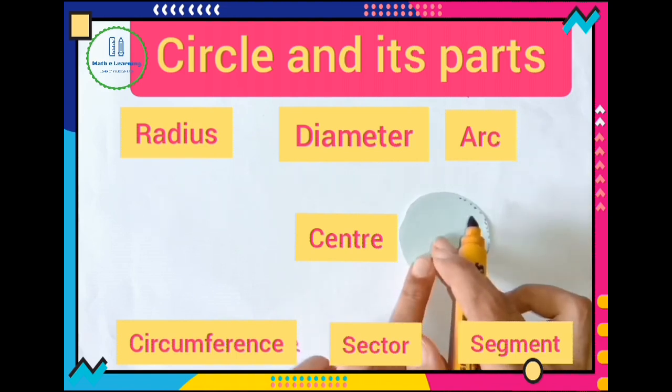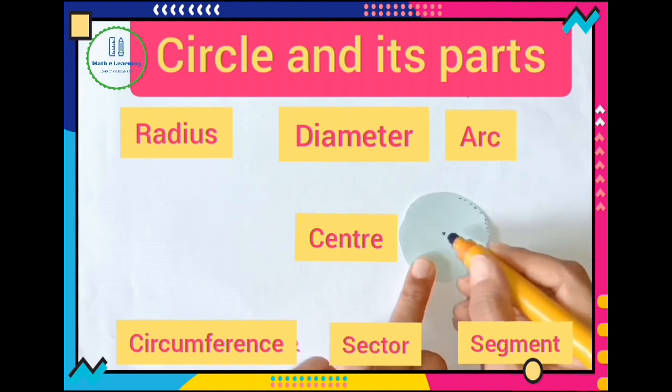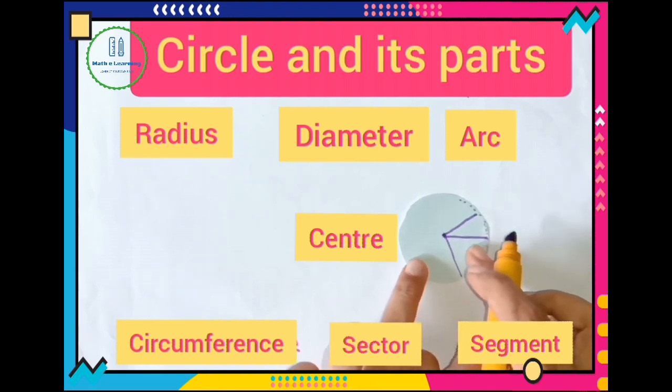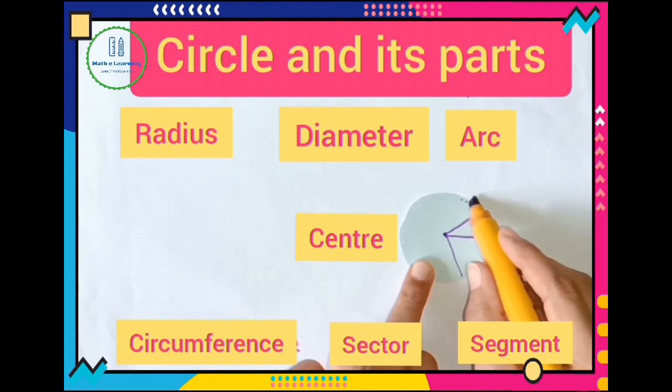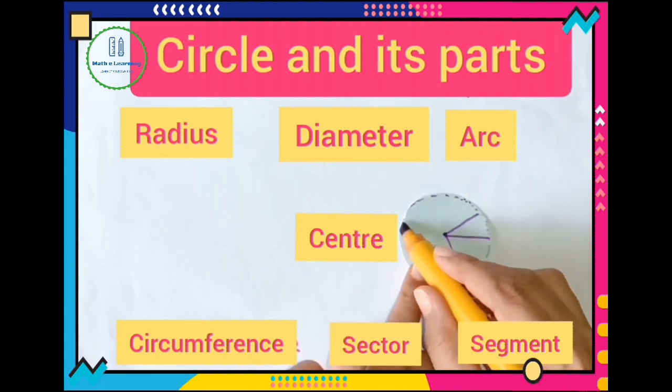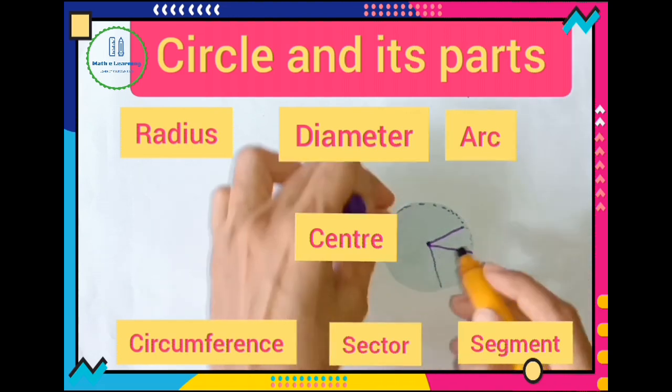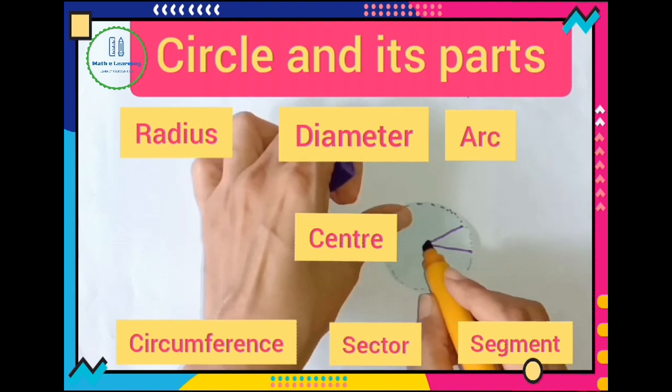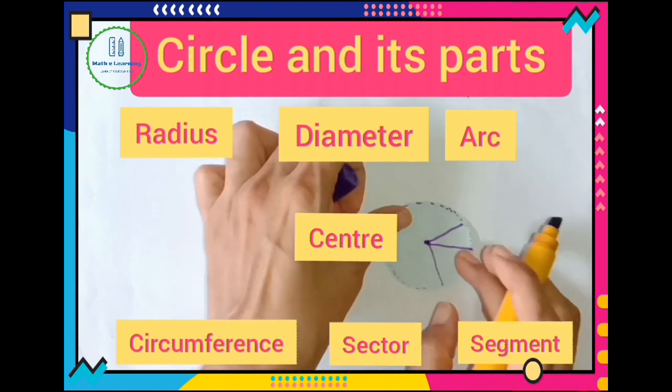These dots are at same distance from this center point. This distance, this distance, all these distances are equal. So we can say that circle is a group of dots at particular distance from this center point.